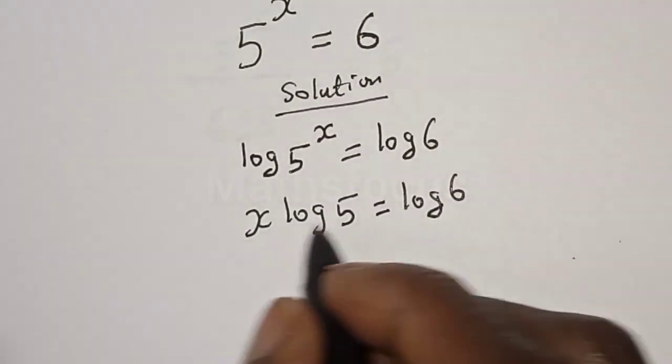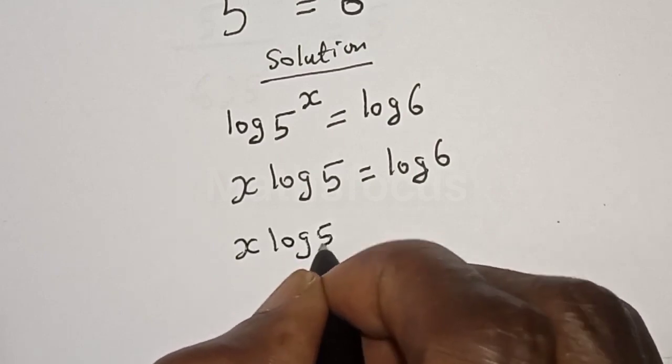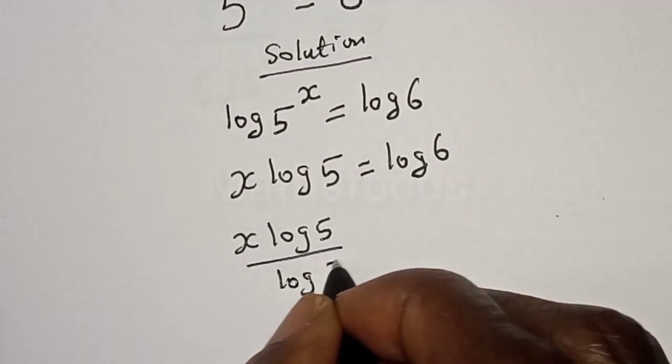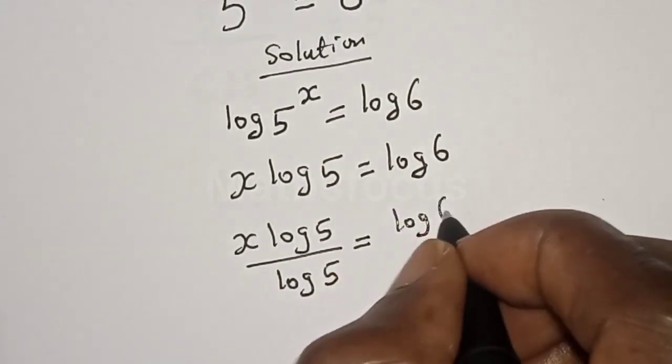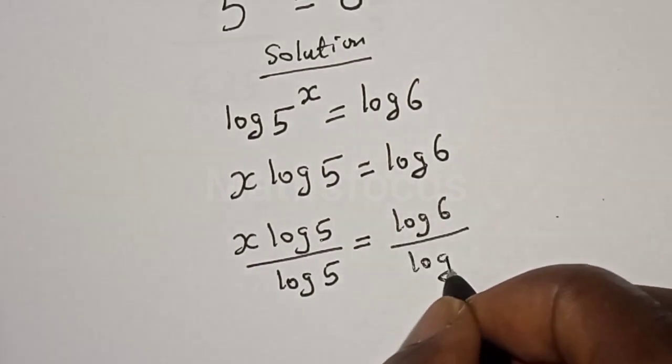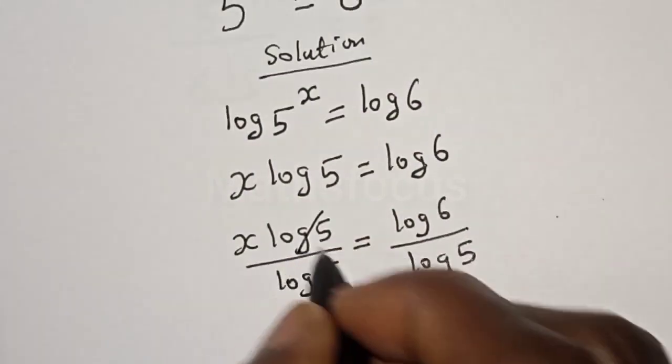Now, let's divide both sides by log 5. s log 5 divided by log 5 is equal to log 6 divided by log 5. This will cancel this.